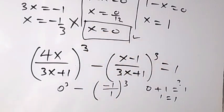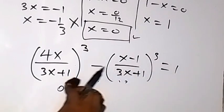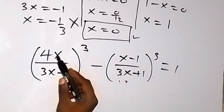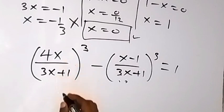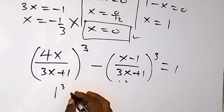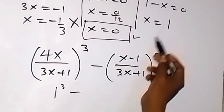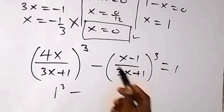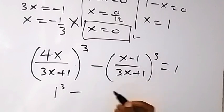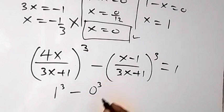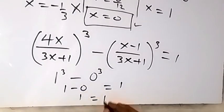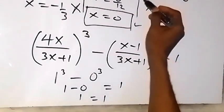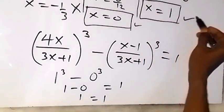For x = 1: 4(1) = 4 and 3(1)+1 = 4, so (4/4)³ = 1³ = 1. Then (1-1) = 0, so (0/4)³ = 0. We have 1 minus 0 = 1, which equals 1. Therefore x = 1 is also a solution. We have these two solutions: x = 0 and x = 1.